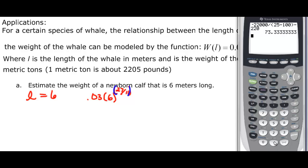And bringing up my calculator, I'm going to say 0.03. And then in parentheses, I'll put my 6 just like I see it on my paper. And then carat, parentheses, 27 divided by 11, close my parentheses. And I find out that the weight of a newborn calf, whale, that is 6 meters long, is actually 2.43 metric ton.